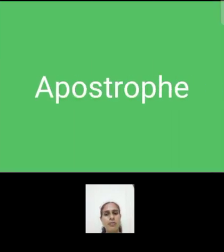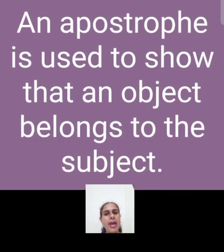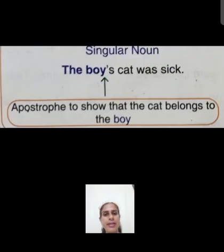Apostrophe. An apostrophe is used to show that an object belongs to the subject. Object ka subject ke saath kya relation hai, woh apostrophe symbol se hum show karte hain. Singular noun and plural noun — do tarah se hum apostrophe symbol use karte hain.